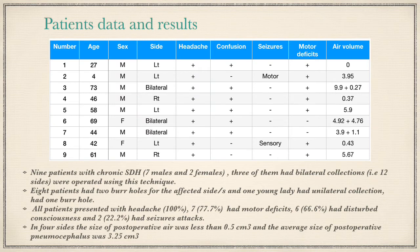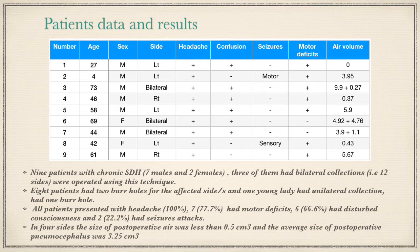Nine patients had chronic subdural hematoma — seven males and two females. Three had bilateral collections, giving 12 sides in total. All had two burr holes for the affected side, except one young lady with unilateral chronic subdural hematoma who had one burr hole. All presented with headache; seven had motor deficits, six had confusion, and two had seizures — one sensory and one motor. In four out of 12 sides, the postoperative air volume was less than 0.5 cubic centimeters, and the average size was 3.25 cubic centimeters. It was noted that the amount of postoperative air increased with increasing age.